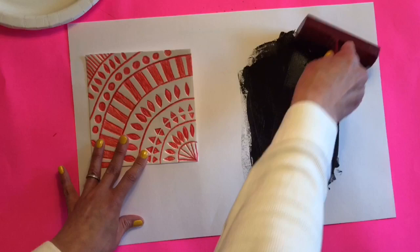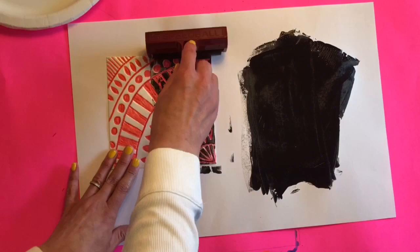Once you've rolled it a few times onto the side of the paper, you're going to roll it onto your printing plate. You want a nice, even amount of black paint and for all the white areas to be covered.